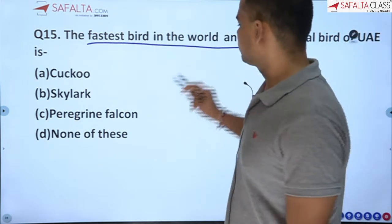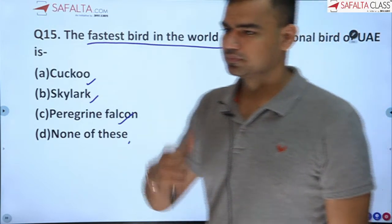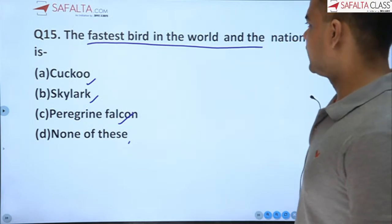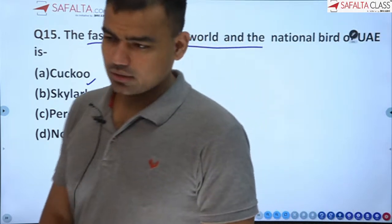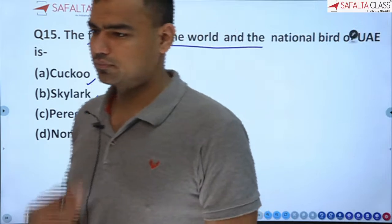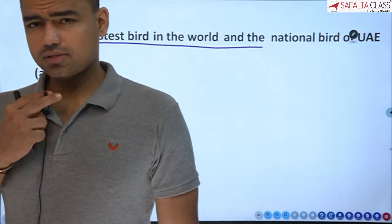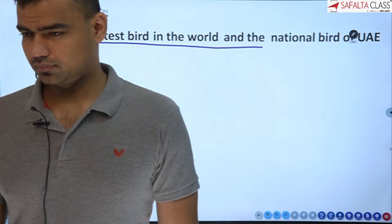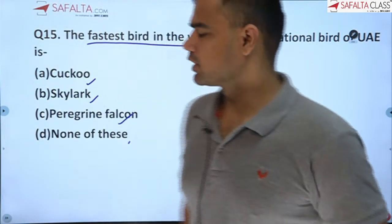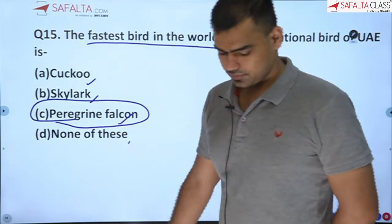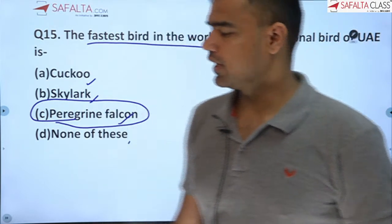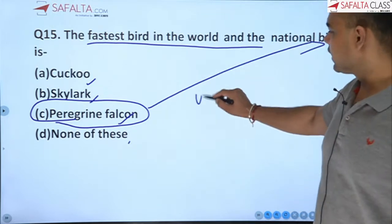What is the fastest bird in the world? Options: Cuckoo, Skylark, Peregrine Falcon, or None of the above. The Peregrine Falcon is the fastest bird in the world and also the national bird of UAE — United Arab Emirates. It can fly at approximately 300 km/h and capture its prey.